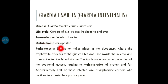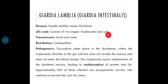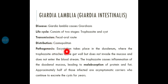Regarding pathogenesis: the infective stage is the cyst, transmitted from infected to non-infected host. The diagnostic stage includes both trophozoite and cyst. After ingestion of the cyst through contaminated food or water, excystation takes place in the duodenum of the host.